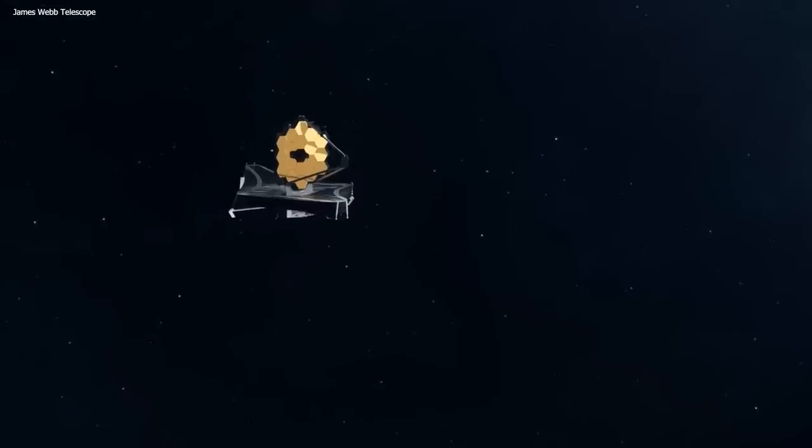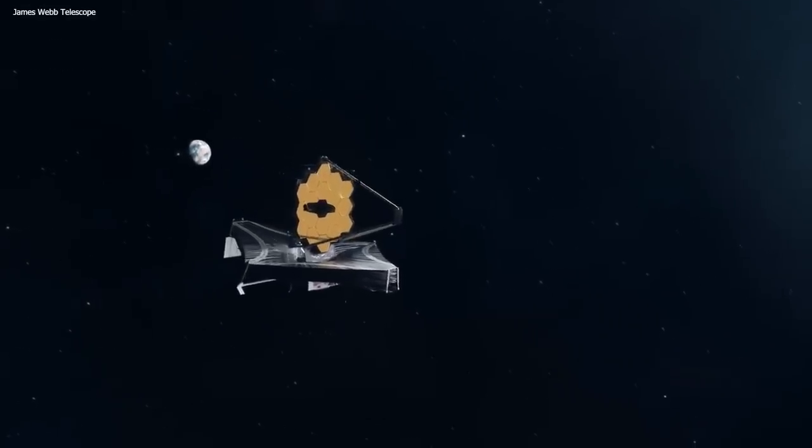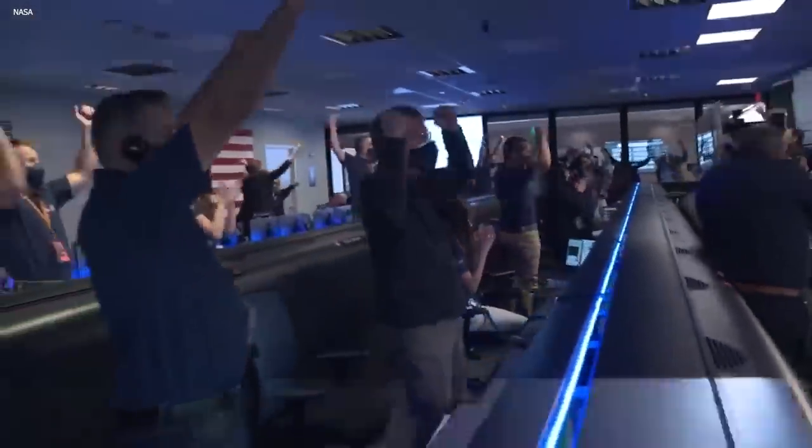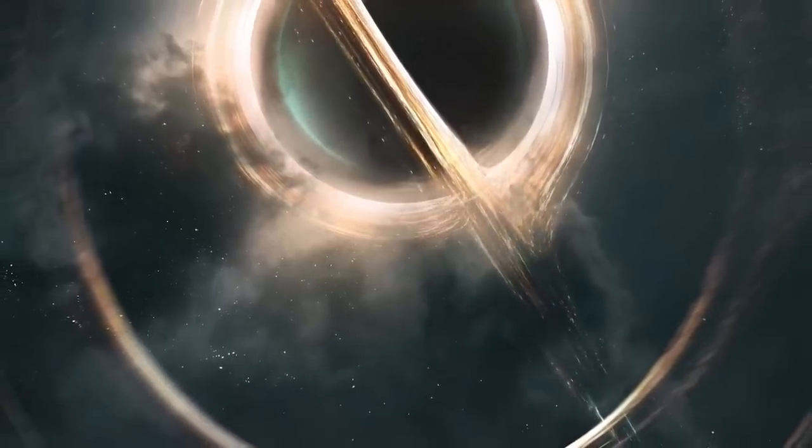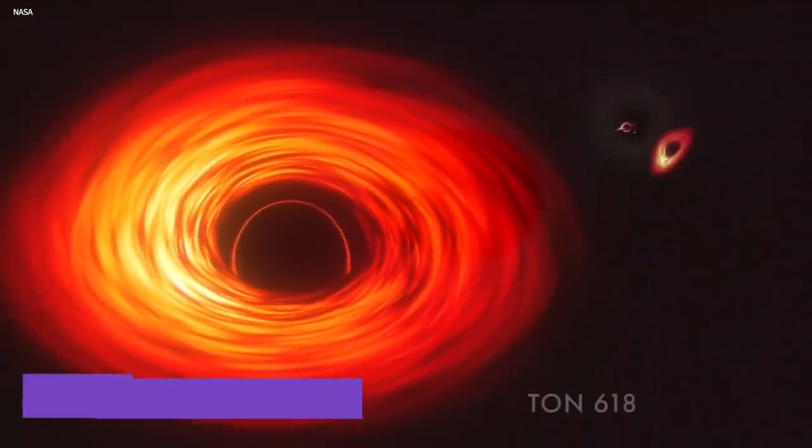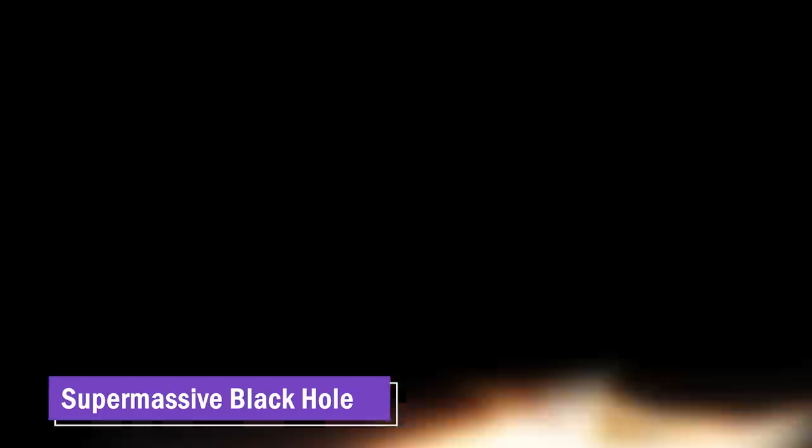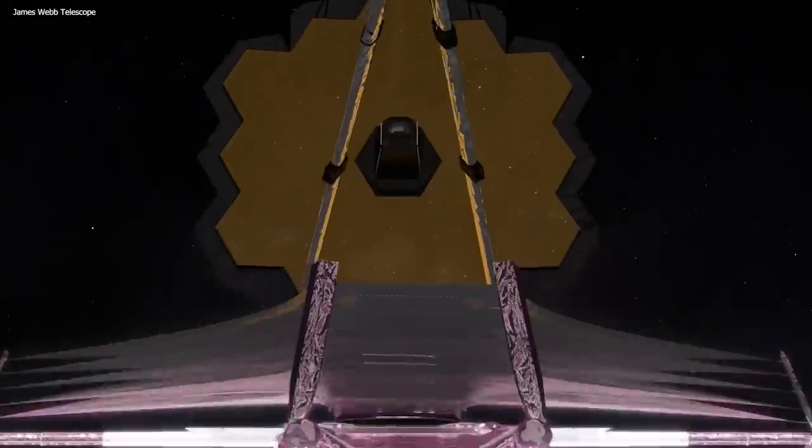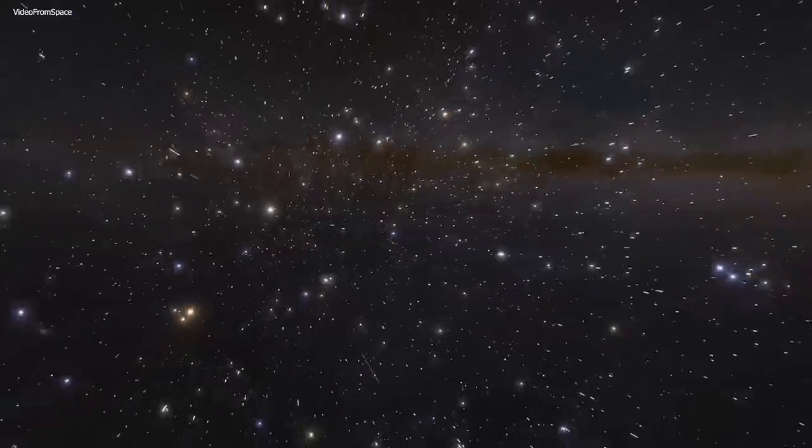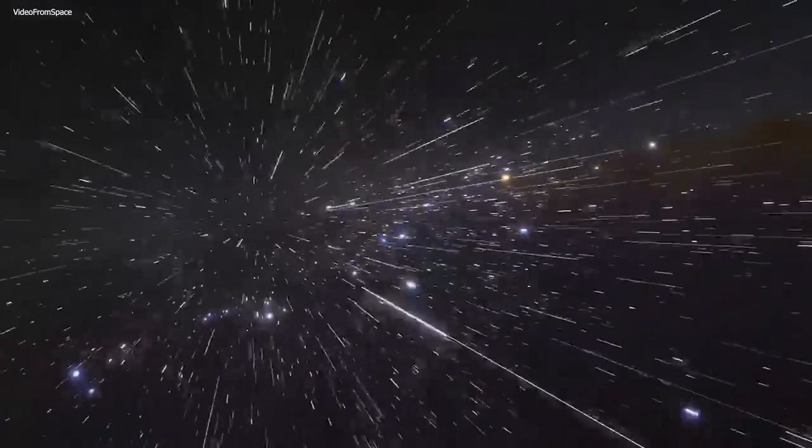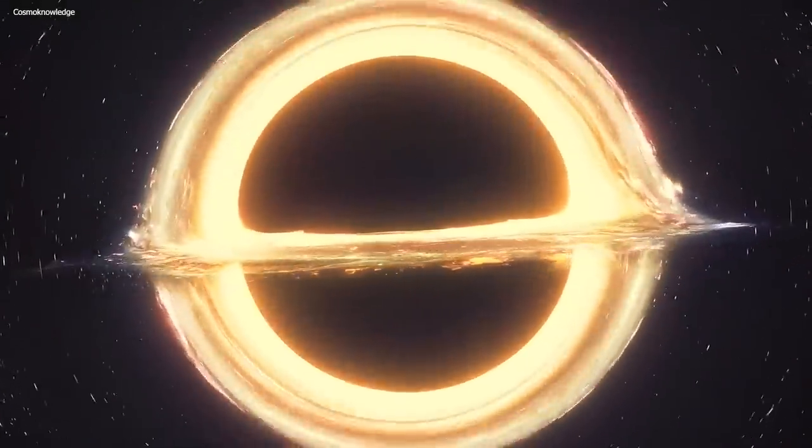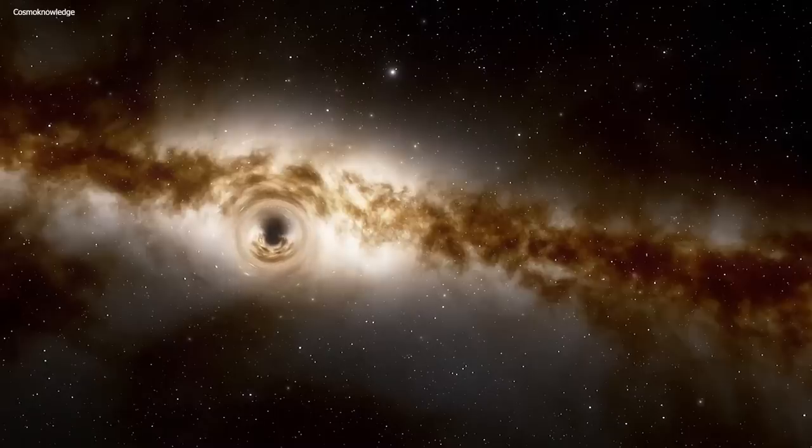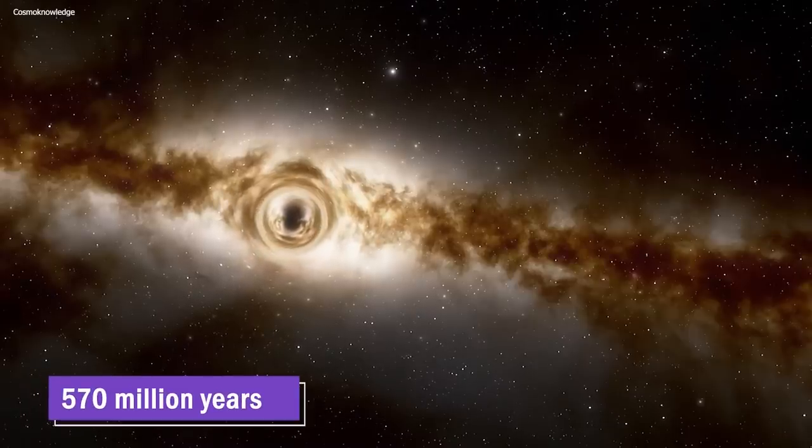But there's another discovery made by the James Webb Space Telescope that takes the cake. Get ready for some spine-chilling news, because JWST has detected what could be the oldest black hole in the universe. This cosmic monster is a supermassive black hole weighing a whopping 10 million times more than the sun. The JWST was able to identify it by analyzing faint glimmers of light that date back to the very beginning of time itself.